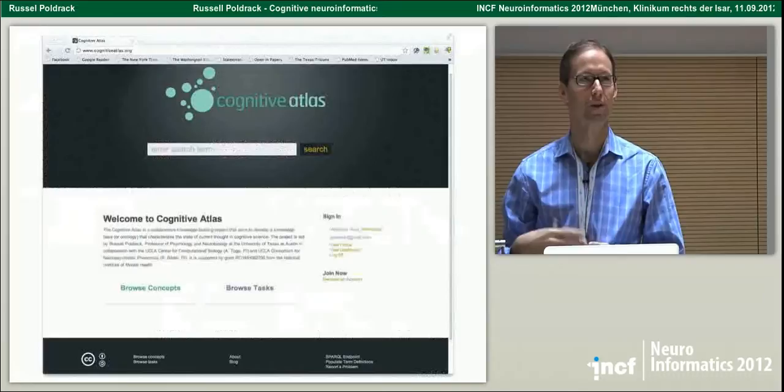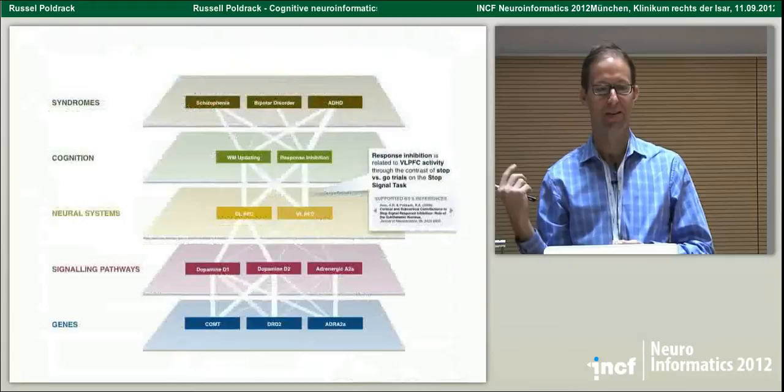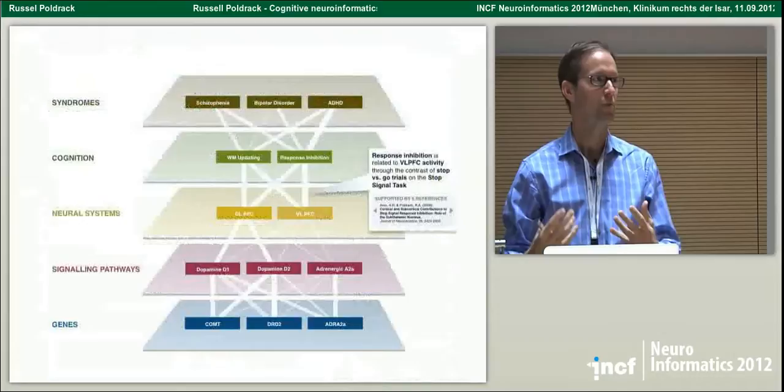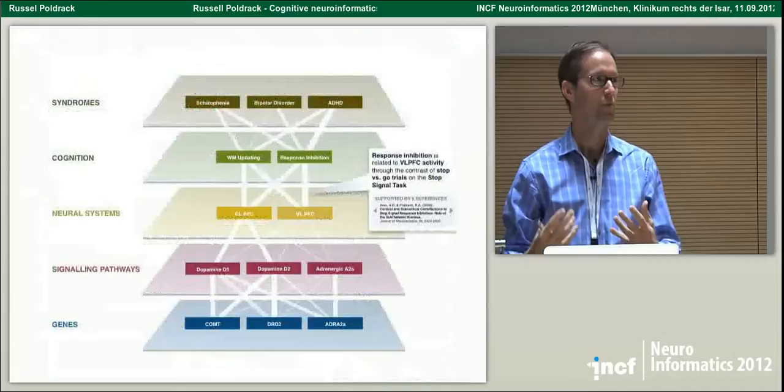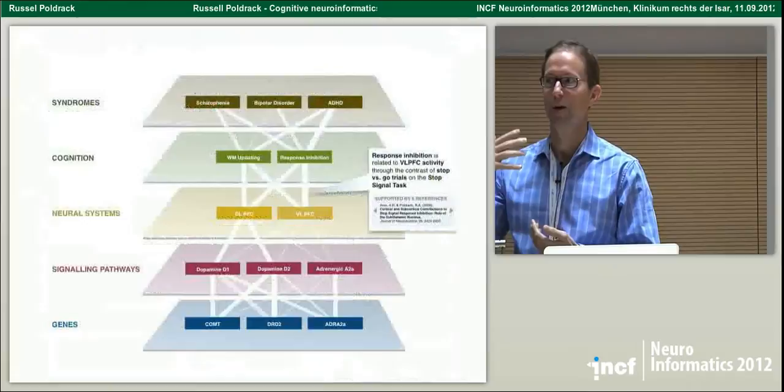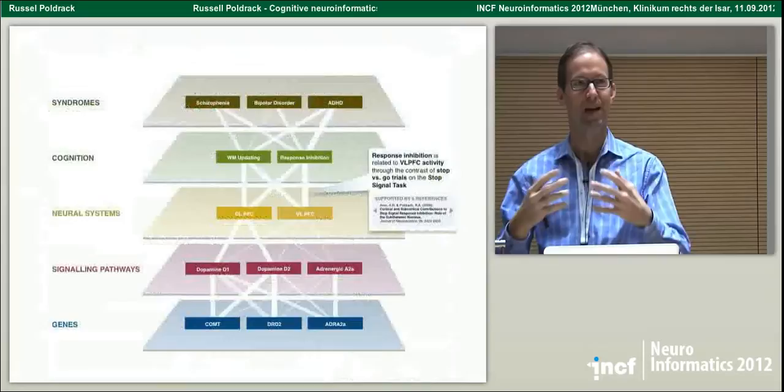He makes the point that we as cognitive neuroscientists, people who use neuroimaging, haven't done a very good job of formalizing what it is that we're actually mapping onto the brain. What he calls the 'butterflies of our mind' — we haven't laid out the ontology of mental processes that we want to map onto the brain.